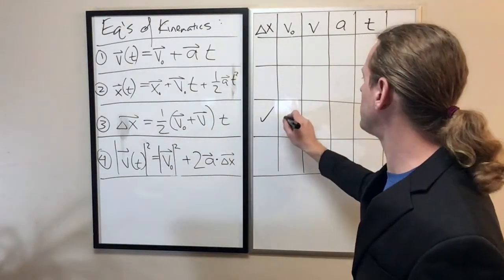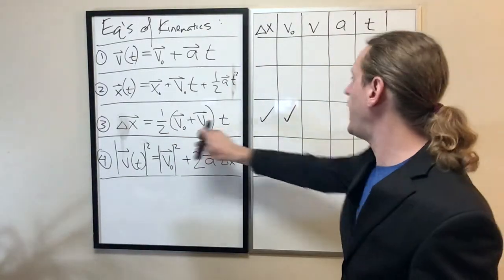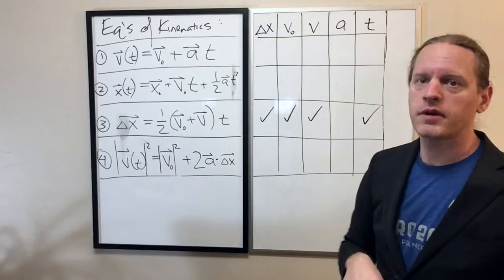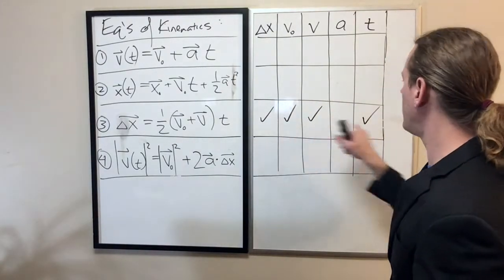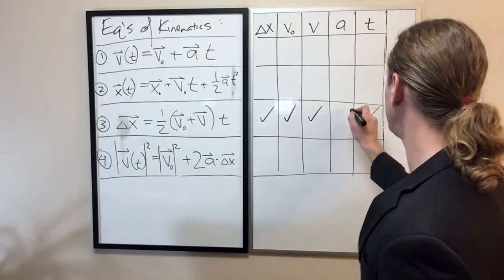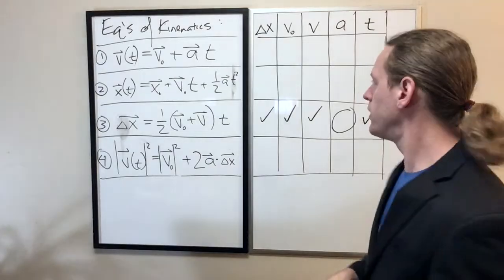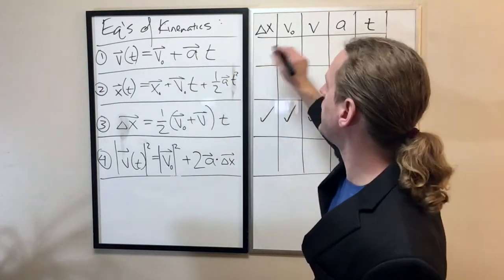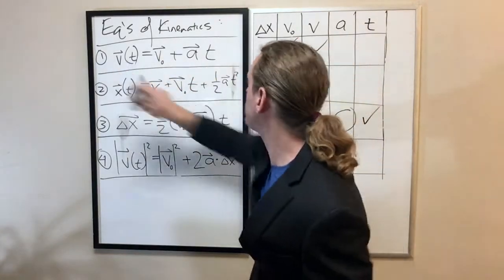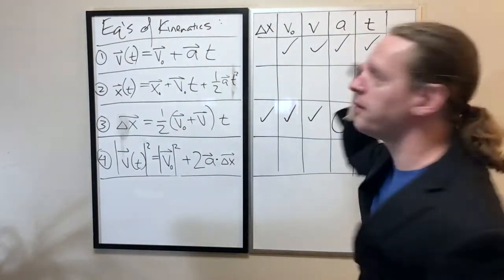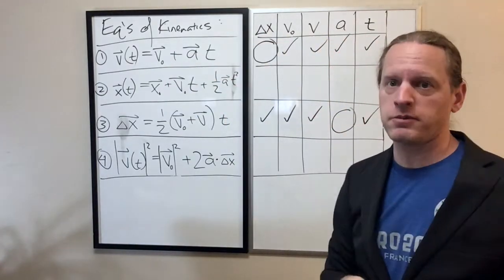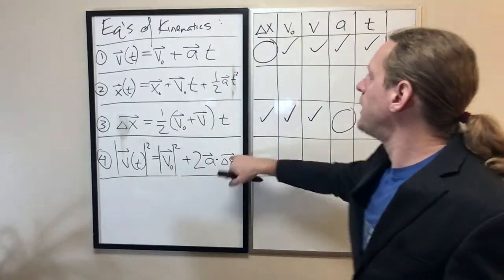So, let's go ahead and look at equation number three. We've already identified we have a delta x, a displacement. We have a v naught, an initial velocity. We have some final velocity and we have time. So, basically, I make a check mark on each of the variables that we have in that equation. Notice that we're missing the acceleration. If we take one look up here, we have some initial velocity, we have a final velocity, we have acceleration and we have time.